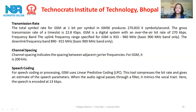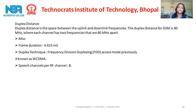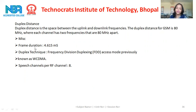Channel spacing indicates the spacing between adjacent carrier frequencies; for GSM it is 200 kHz. For speech coding, GSM uses linear predictive coding LPC. This tool compresses the bit rate and gives an estimate of the speech parameter. When the audio signal passes through a filter, it mimics the vocal tract. The speech is encoded at 13 kbps. The duplex distance is the space between the uplink and downlink frequencies; for GSM it is 80 MHz, where each channel has two frequencies that are 80 MHz apart. The frame duration is 4.615 ms. The duplex technique is frequency division duplexing. The number of speech channels per RF channel is 8.